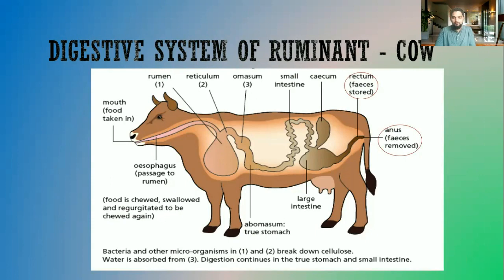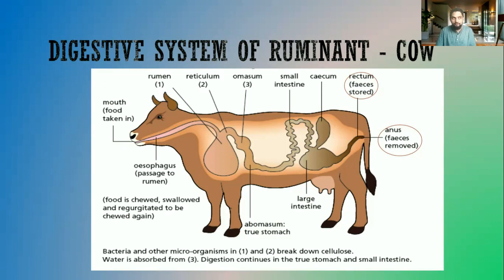After the rumen, the food enters the reticulum, where the food is sorted out. Larger parts that have not been properly broken down are regurgitated into the mouth — the animal chews its cud. When broken down further, it will enter the omasum, where water is removed and some nutrients present are also absorbed.